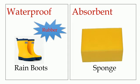Materials can be waterproof, like these rainboots. They are made of rubber, and rubber is waterproof. Materials can be absorbent, like this sponge. It takes in water, or it soaks up liquid.